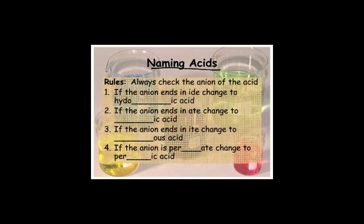We've got charts in the room. If you have an anion that ends in the ide ending, then it becomes a hydro something ic acid. If the anion ends in ate, it becomes an ic acid. If it ends in ite, it's an ous acid, and if it's a per ate, it's a per ic acid.